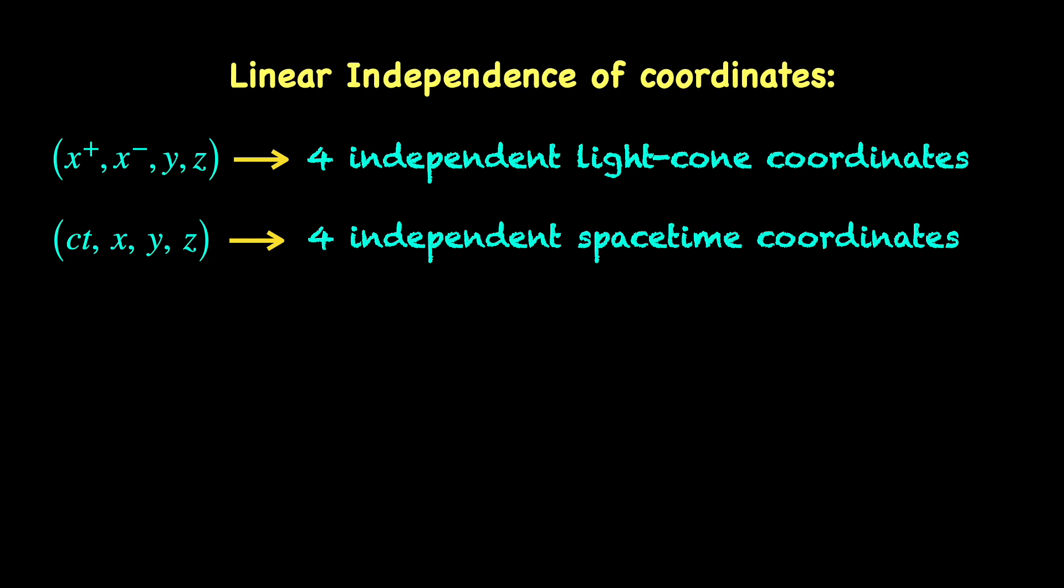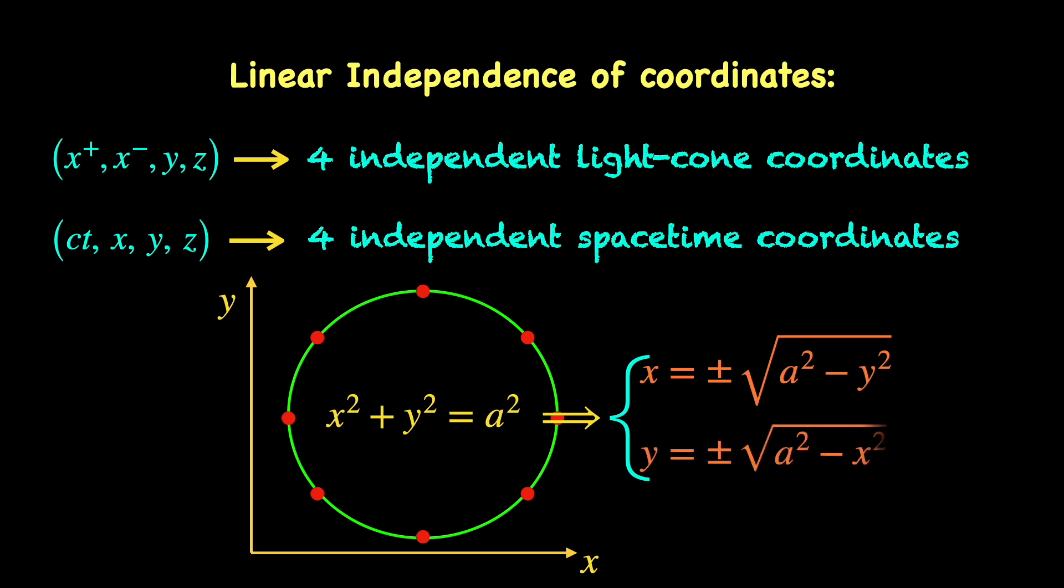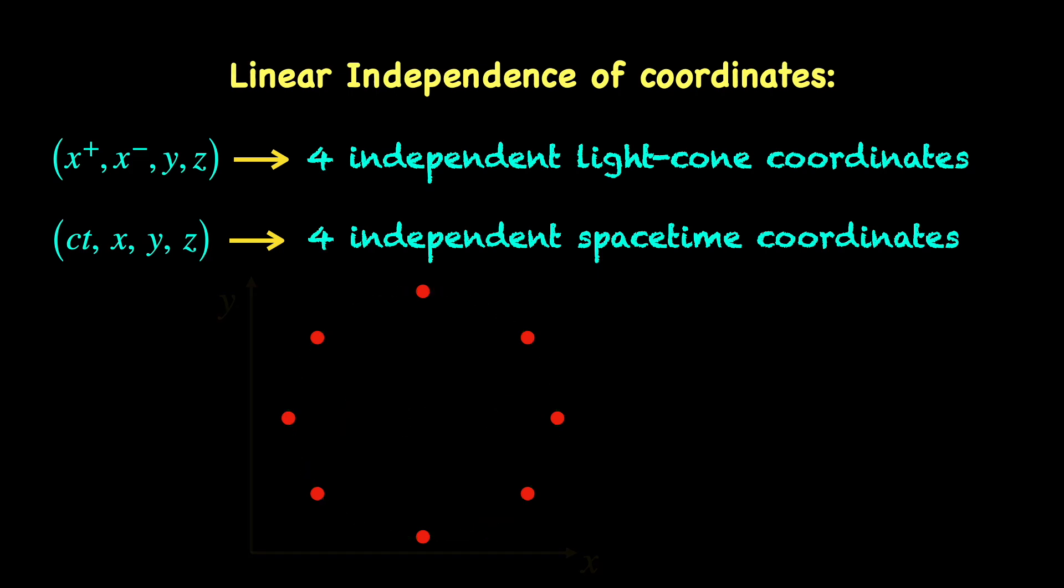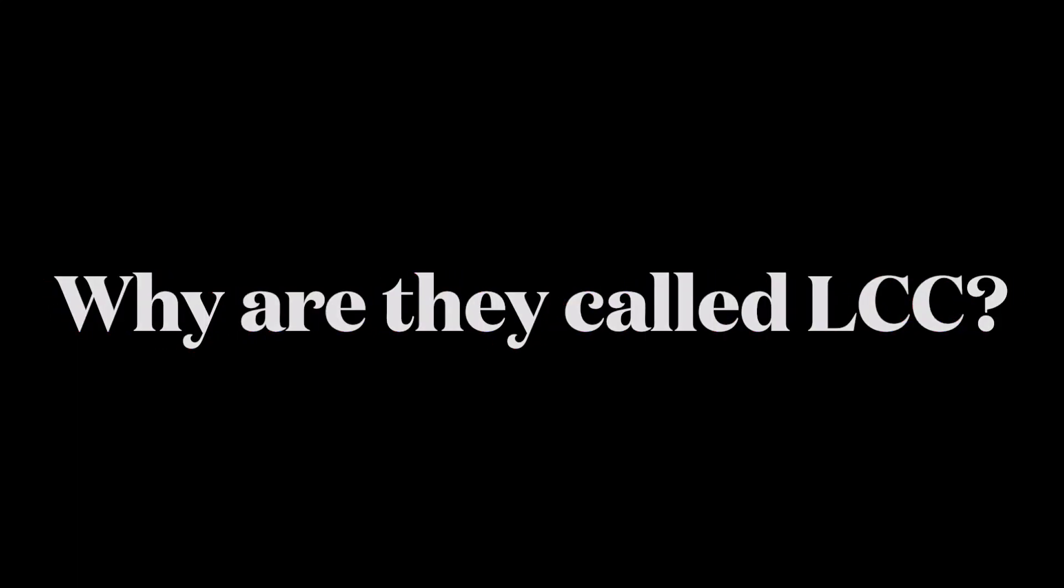As an easy analogy, think of points on a circle. For them, x can be written in terms of y or vice versa, but the same is not true for points that are not on the circle. Anyway, coming back to the light cone coordinates, why do we call them that?